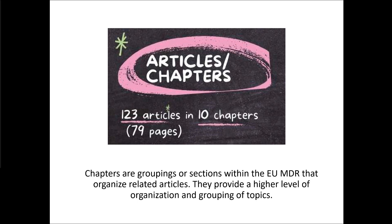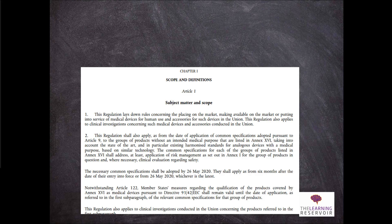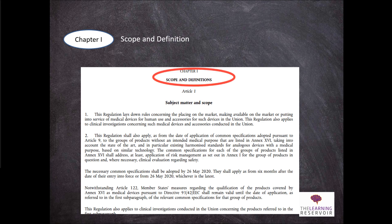Within a chapter you can have a number of articles — the chapters are the groupings. Chapter 1 covers scope and definitions, and within it you can see articles such as subject matter and scope. Here within the regulation it lays out the requirements regarding the scope of the MDR.